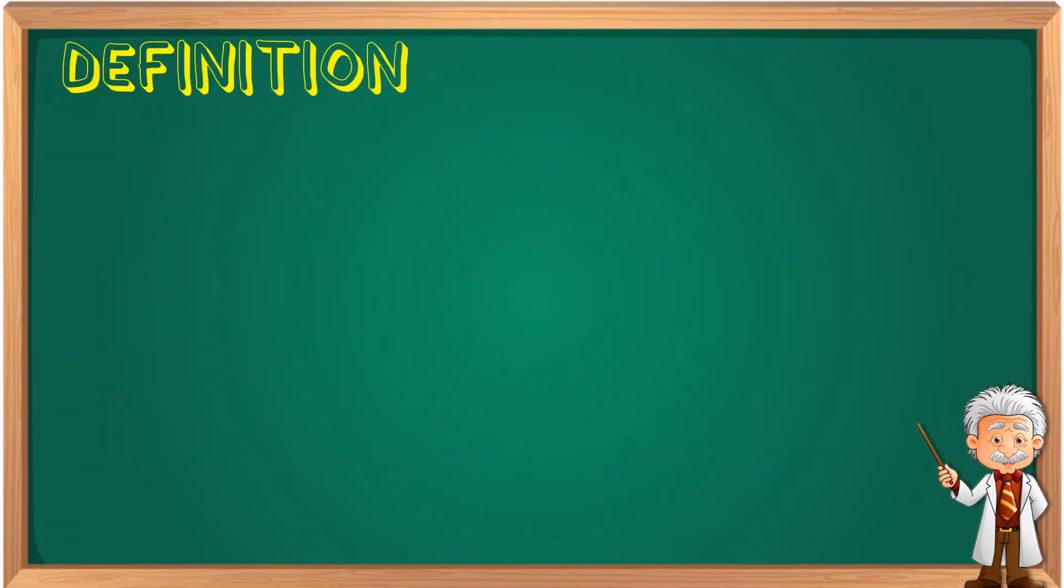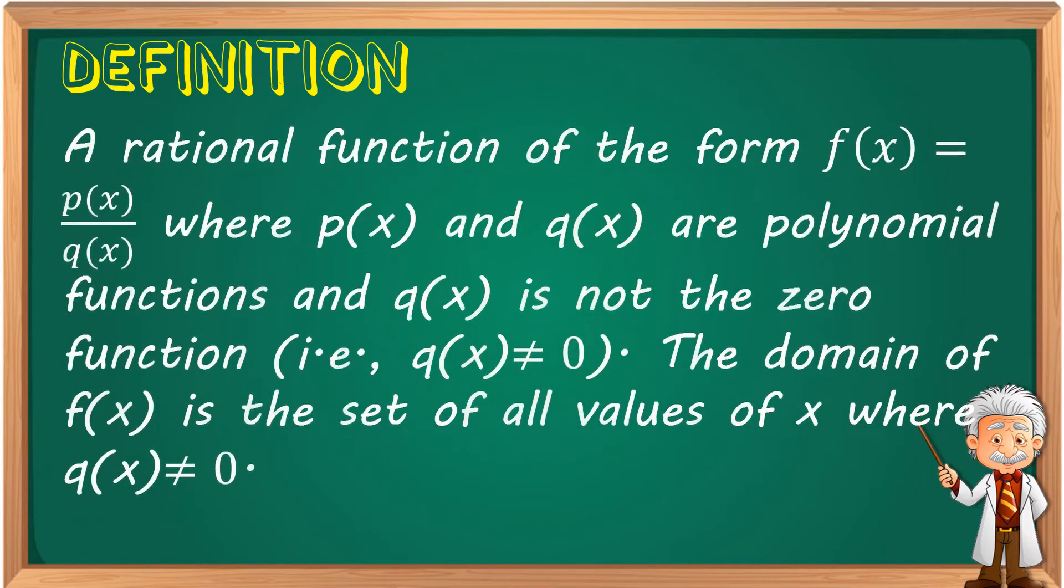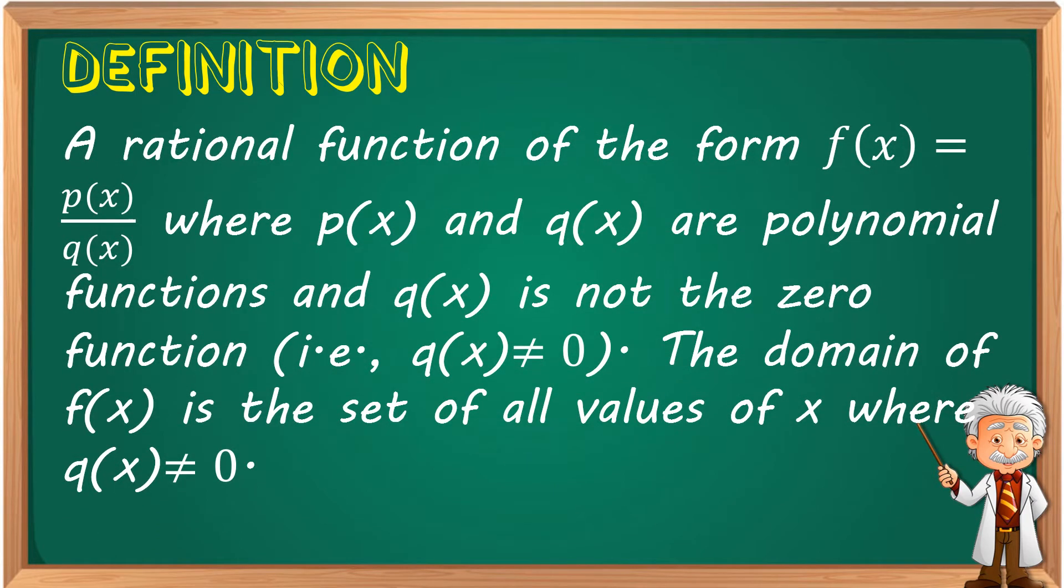Let's now move on to the definition of a rational function. A rational function of the form f(x) = P(x)/Q(x), where P(x) and Q(x) are polynomial functions and Q(x) is not equal to 0 function. That is, Q(x) cannot be equal to 0. The domain of f(x) is the set of all values of x where Q(x) is not equal to 0.